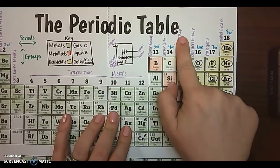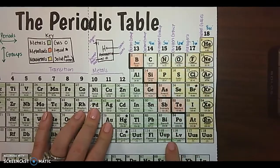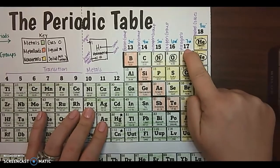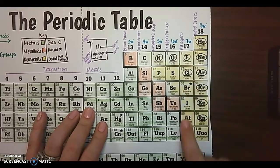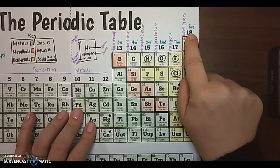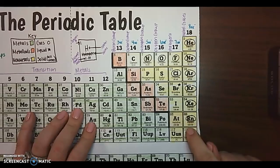Group 15 is called the nitrogen group with five valence electrons. Group 16 is the oxygen group with six valence electrons. 17 is called the halogens. It has seven valence electrons. Group 18 is called the noble gases and they have eight valence electrons.